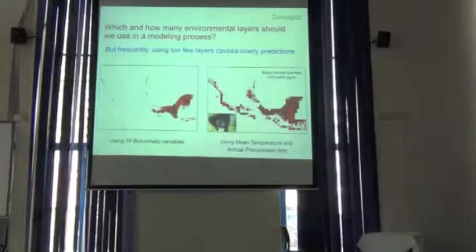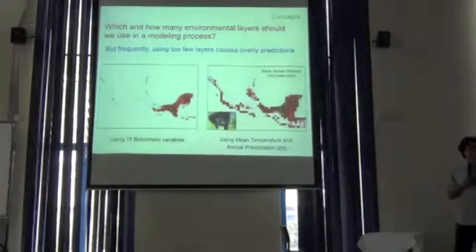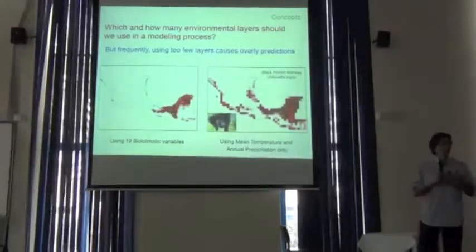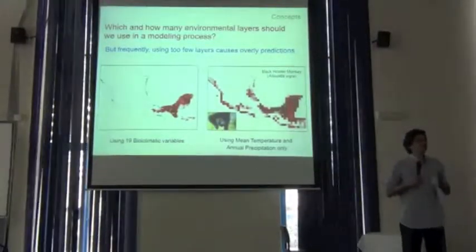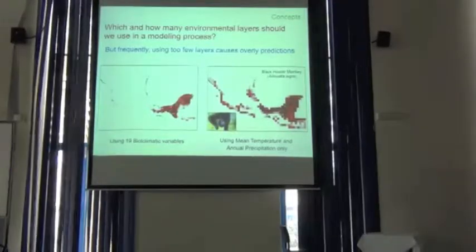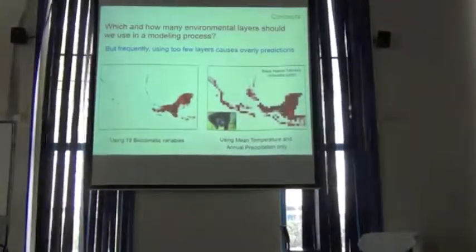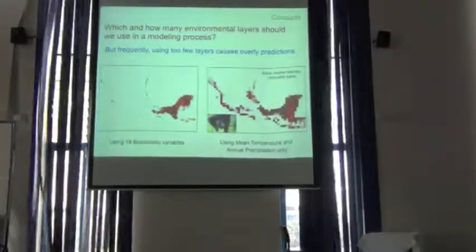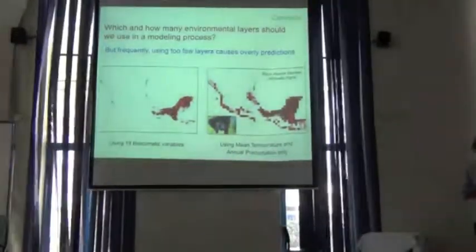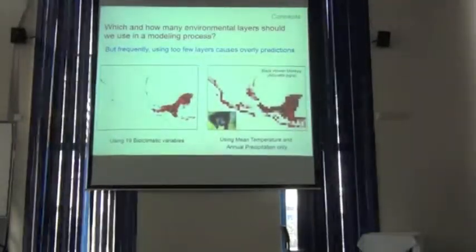There are consequences if you use too few or too many variables. When you use very few variables, the model results tend to over-predict the conditions for the distribution of the species. As shown in this example, using only two variables — temperature and precipitation — versus using non-bioclimatic variables produces a clearly visible effect on the prediction.